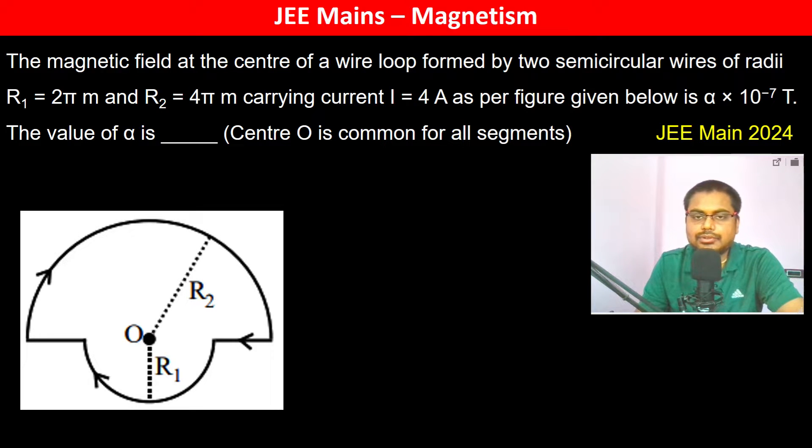The magnetic field in the center of the wire loop formed by two semicircular wires. So for a circular wire we have the magnetic field in the center as mu_0 i by 2r.